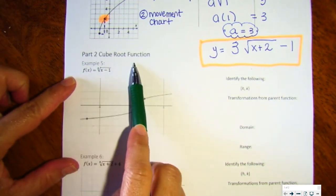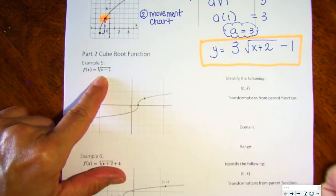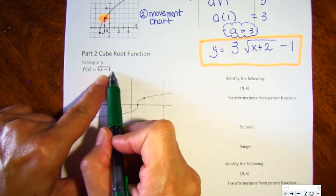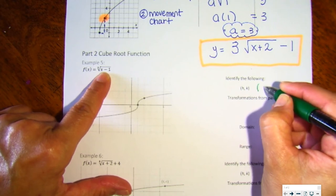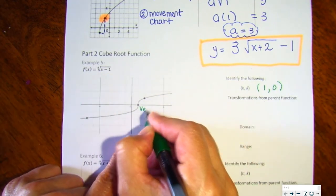Part two is going to be cube root functions. We're going to have the same style of transformations: h, k, and a. So we're going to identify the following: the vertex. According to the graph, there's not a k value out here. h is still opposite, so h, k is zero, and you can see that right here. Here's the vertex.